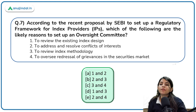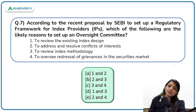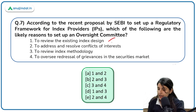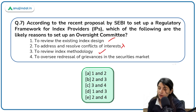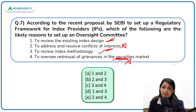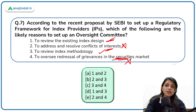Under the SEBI framework, an oversight committee was set up. The reasons for forming this oversight committee were: to review the existing index design — correct; to address and resolve conflict of interest — not one of the reasons; to review index methodology — correct; to oversee redressal of grievances in the securities market — not a reason. So only two reasons apply: reviewing existing index design and reviewing the index methodology.